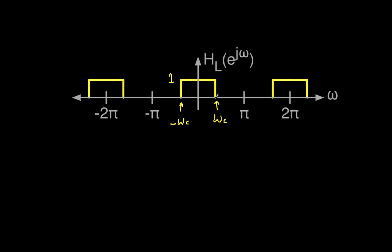Between omega c and pi, and minus omega c and minus pi, the frequency response is 0, meaning that any frequencies in these bands will be eliminated completely. It lets low frequencies go through and high frequencies get eliminated, thus the name low-pass filter.